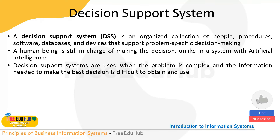Decision support systems are an organized collection of people, procedures, software, databases, and devices used to support problem-specific decisions. A human being is still in charge of making the decision, unlike systems with artificial intelligence. These systems collect data from transaction processing and management information systems and generate reports — for example, identifying peak sales days, hot-selling items, and the hours when most customers are active — helping you target campaigns and reach the right decisions.